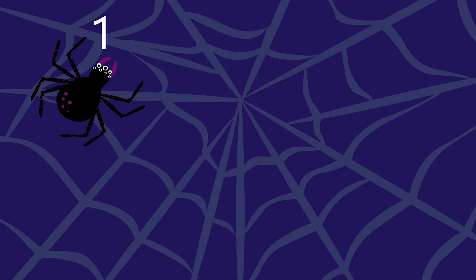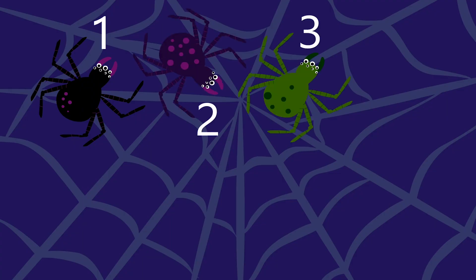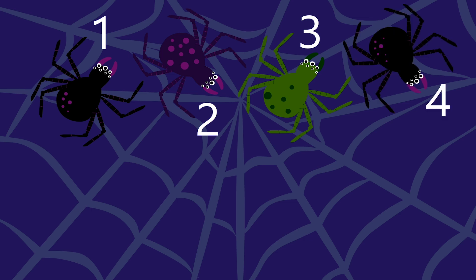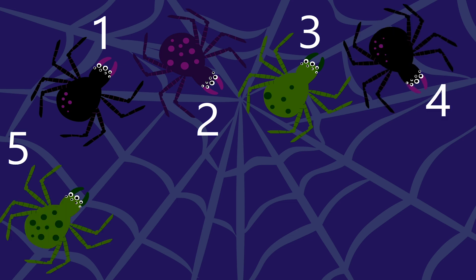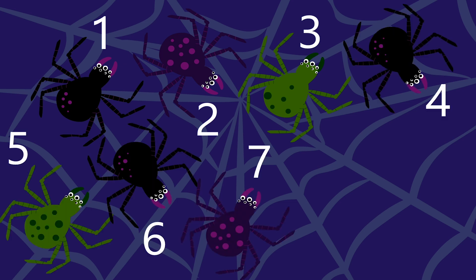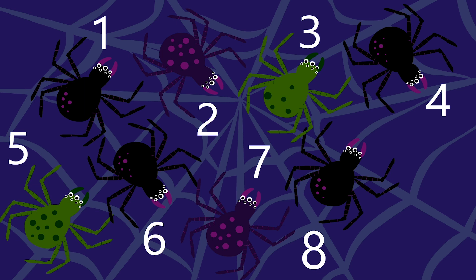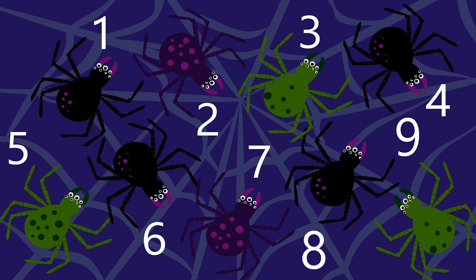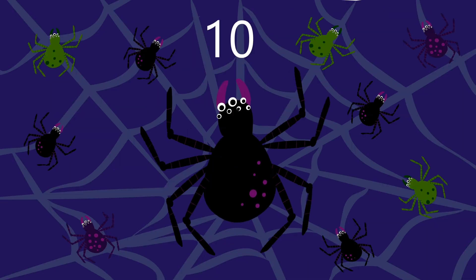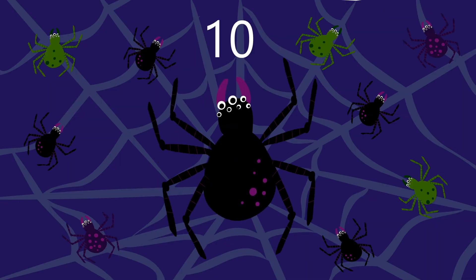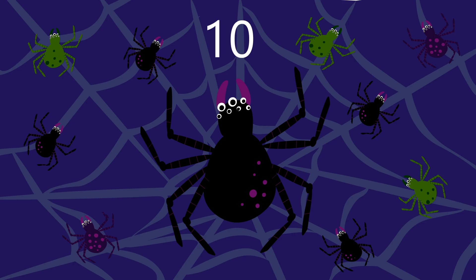One creepy, two creepy, three creepy spiders. Four creepy, five creepy, six creepy spiders. Seven creepy, eight creepy, nine creepy spiders. Ten creepy spiders in a web.